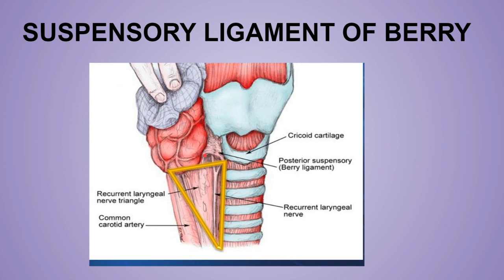Now, other features of the thyroid gland. First of all, the suspensory ligament of Berry. The thyroid gland is enclosed by the thyroid capsule. The posterior layer of the thyroid capsule is comparatively thick, and on either side of the gland, the capsule is thickened further, forming the suspensory ligament of Berry, also known as the posterior suspensory ligament of Berry.